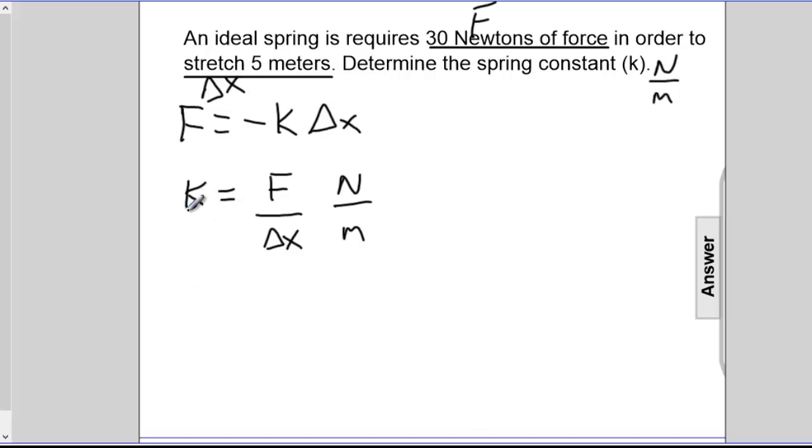Stiff springs have big k values. Light springs have small k values.